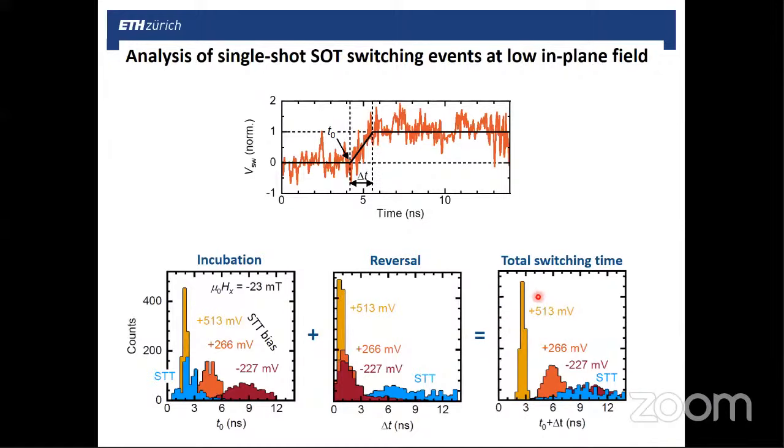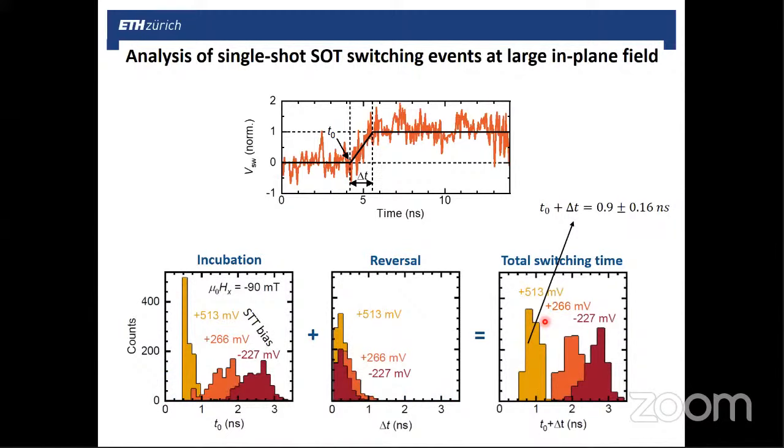I think at least less than 20 percent of the switching threshold bias. Now, if we apply a stronger in-plane field, so 90 millitesla instead of 23 millitesla, now we see that these curves really reduce in time. So now we have a different scale here. In particular, in the fastest configuration that we probed, we see that we can achieve switching in about a nanosecond. What is really, I think, remarkable here is not just the total switching time, but mainly the width of this distribution, which is really very narrow.